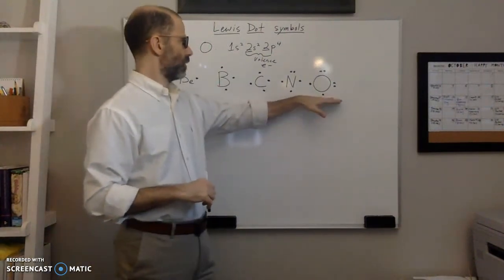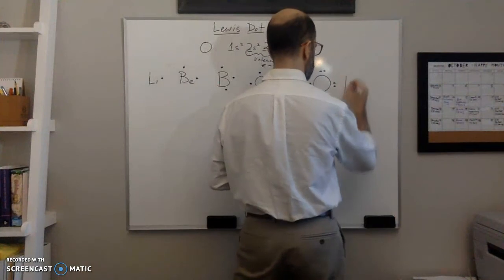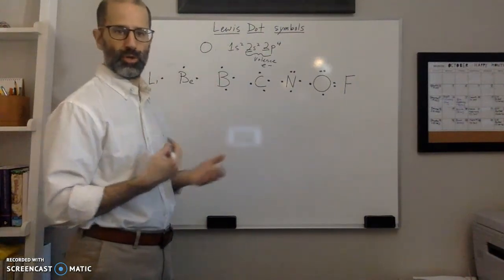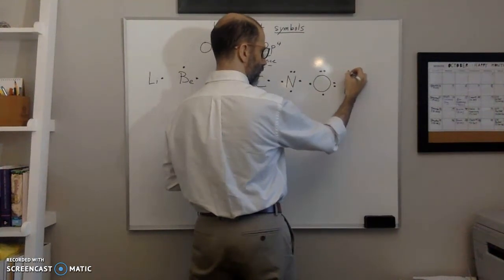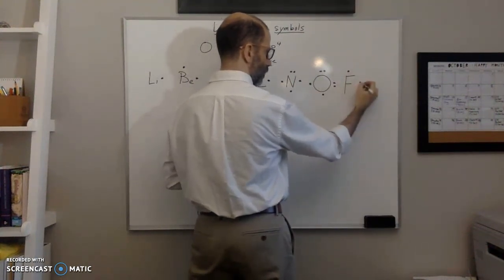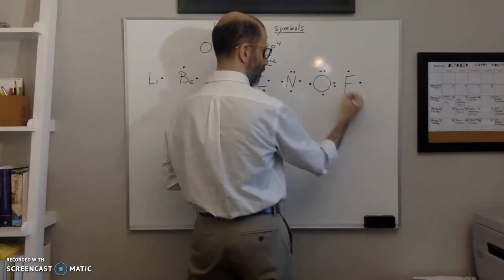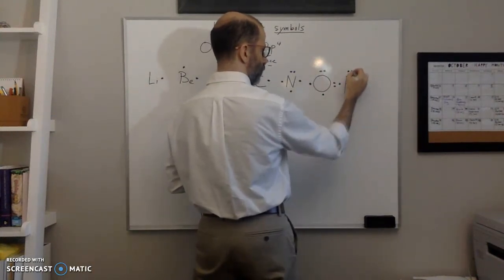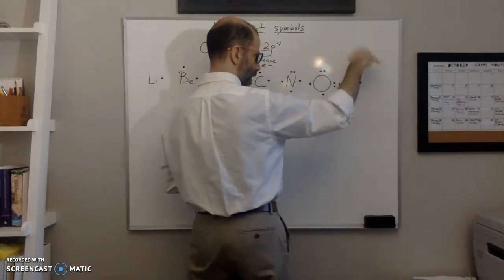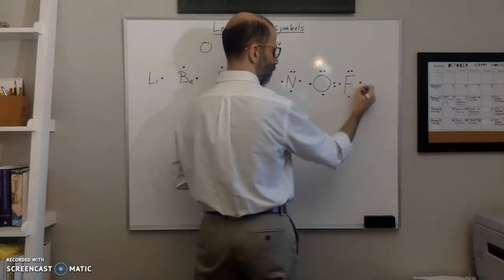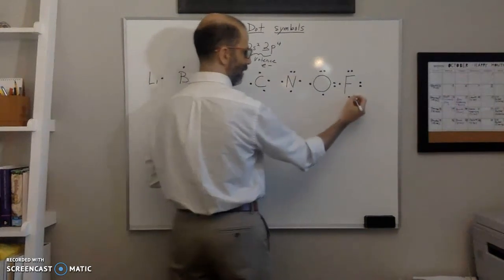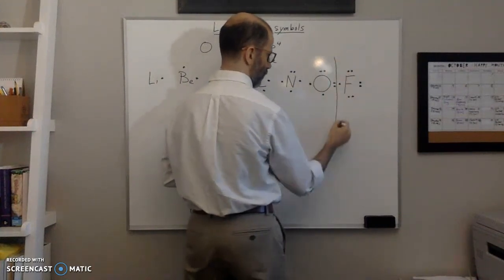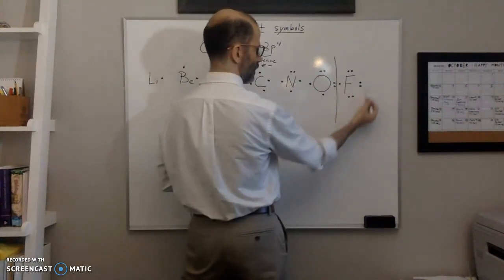Fluorine has seven valence electrons. Starting on top and going clockwise: one on top, one on the right, one on the bottom, one on the left — that's four. Three more to go: pair up the top, then pair the right side, then pair the bottom. Each pair runs along the side of the box. That's the Lewis dot symbol for fluorine.